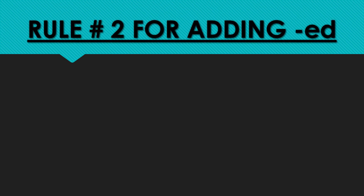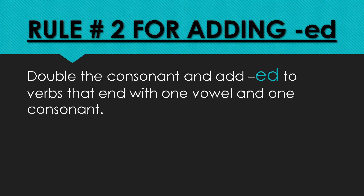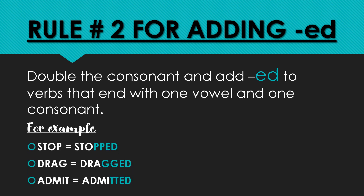Rule number two for adding '-ed': you have to double the consonant and add '-ed' to verbs that end with one vowel and one consonant. For example, 'stop' (S-T-O-P) ends with vowel O and consonant P, so it becomes 'stopped'. Similarly, 'drag' (D-R-A-G) ends with vowel A and consonant G, so it becomes 'dragged'. And 'admit' becomes 'admitted' in simple past tense.